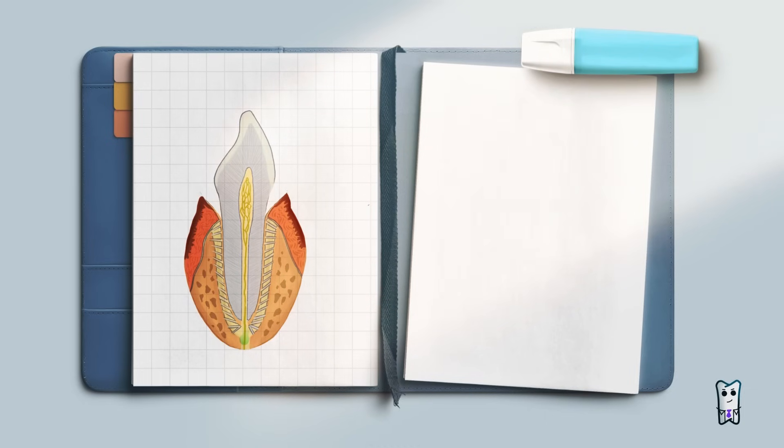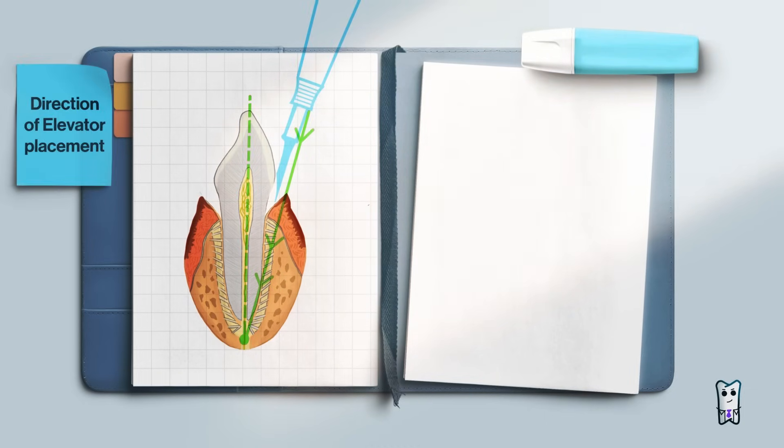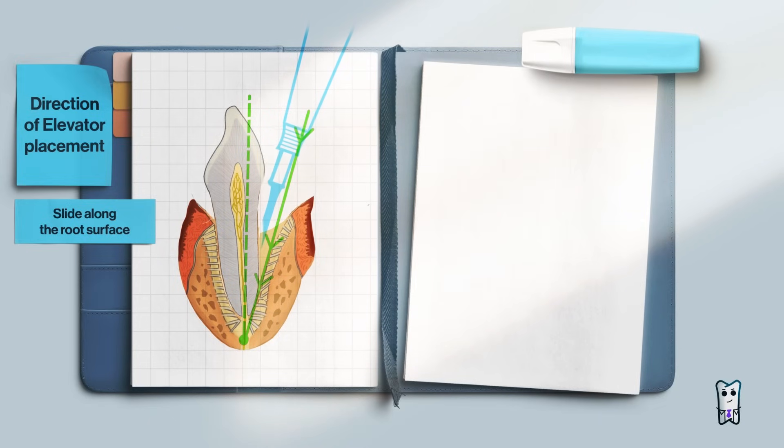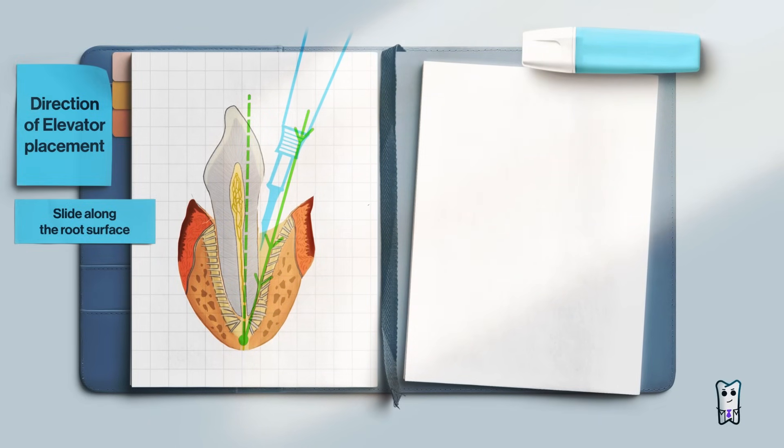First of all, the direction of the elevator placement. The idea is that the tip of the elevator should slide along the root surface so that it can get right into the periodontal space. If you ask me what is the exact direction, I would say that the elevator should point toward the apex of the tooth.